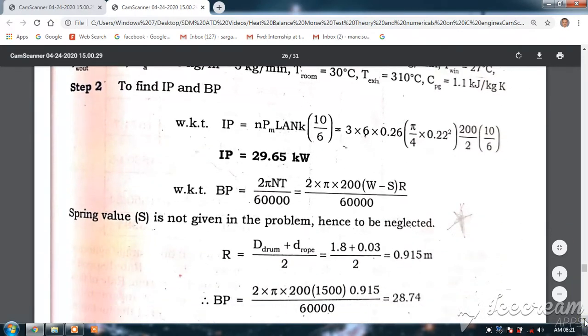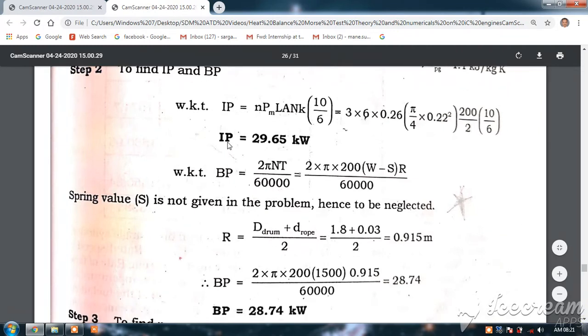Now, to find IP and BP. IP, the formula is N blank 10 by 6. So, 3 cylinder into 6 bar into 0.26 meters into pi by 4 into 0.22 square, that area, into N 200, K is 1 by 2 into 10 by 6. So, IP is equal to 29.65 kilowatt.